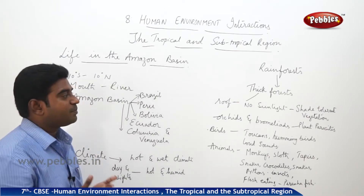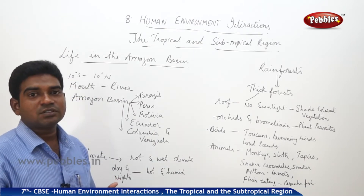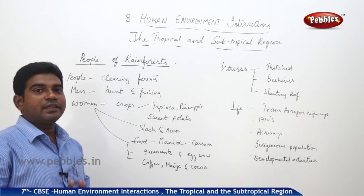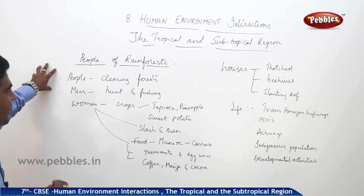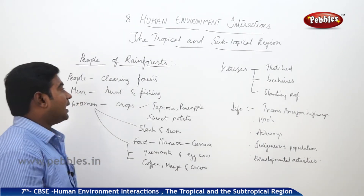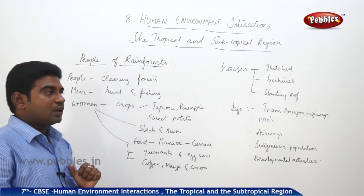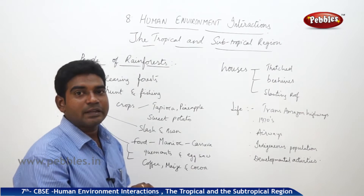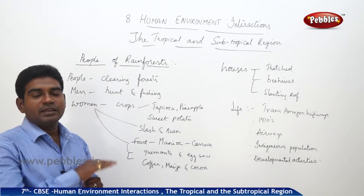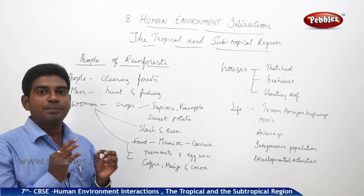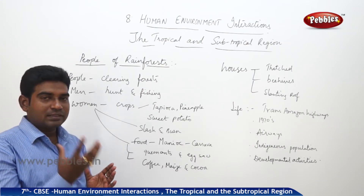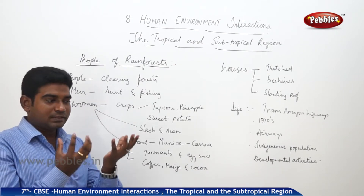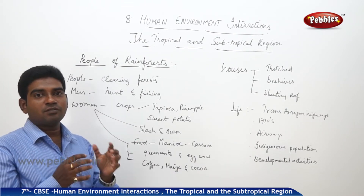Now, how is the life of the people in the rainforest region? The main work of the people here was to clear the forest. Men used to do hunting or fishing while women used to do agriculture. They practiced slash-and-burn agriculture. First they select a piece of land, clear all the trees and plants growing there, burn them, and leave the land. The soil is left with burnt ashes, and when water falls, the ash goes down into the soil and adds nutrients to the land.